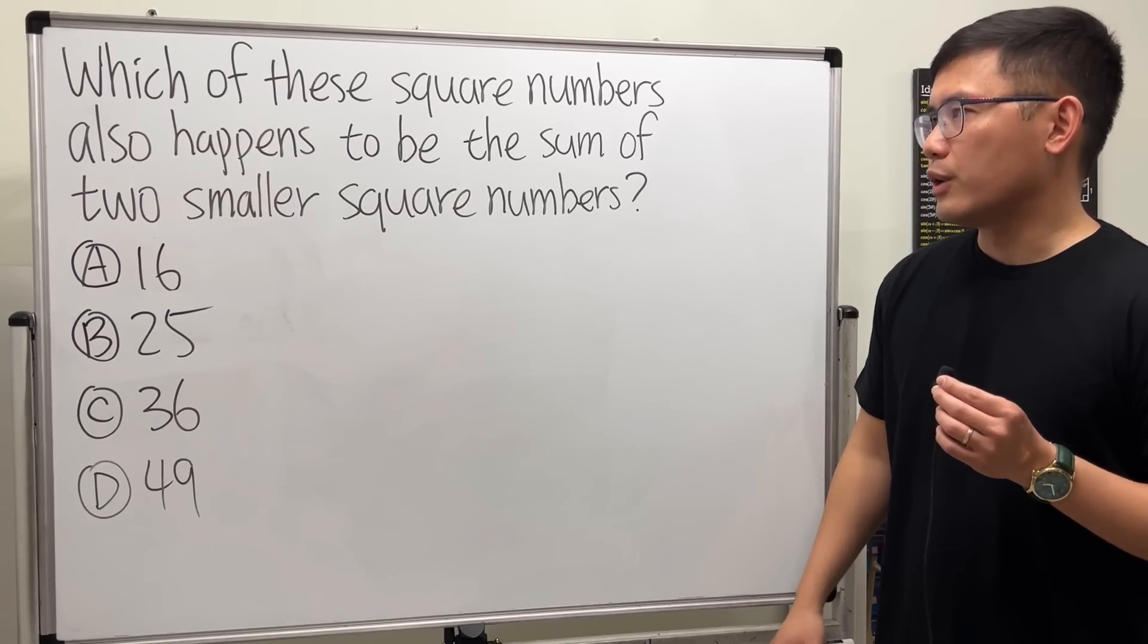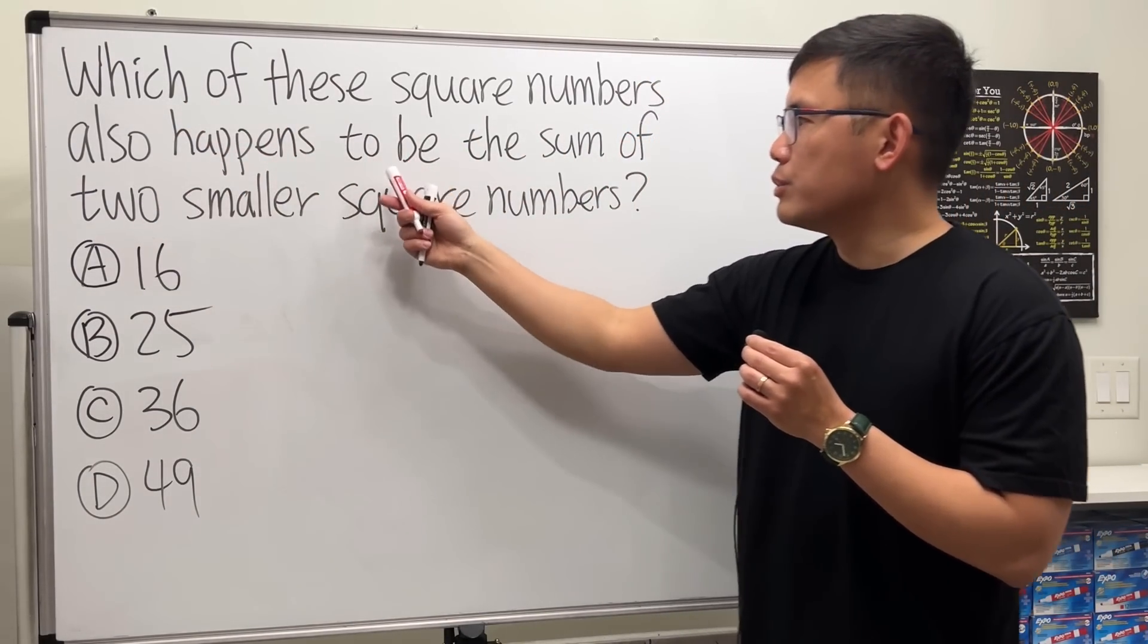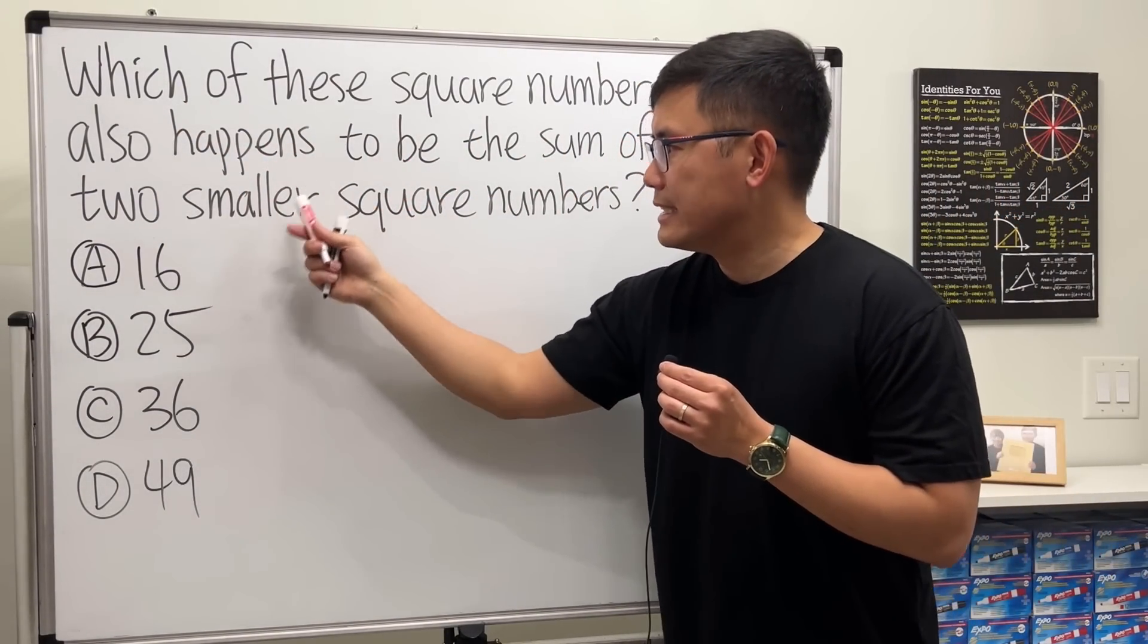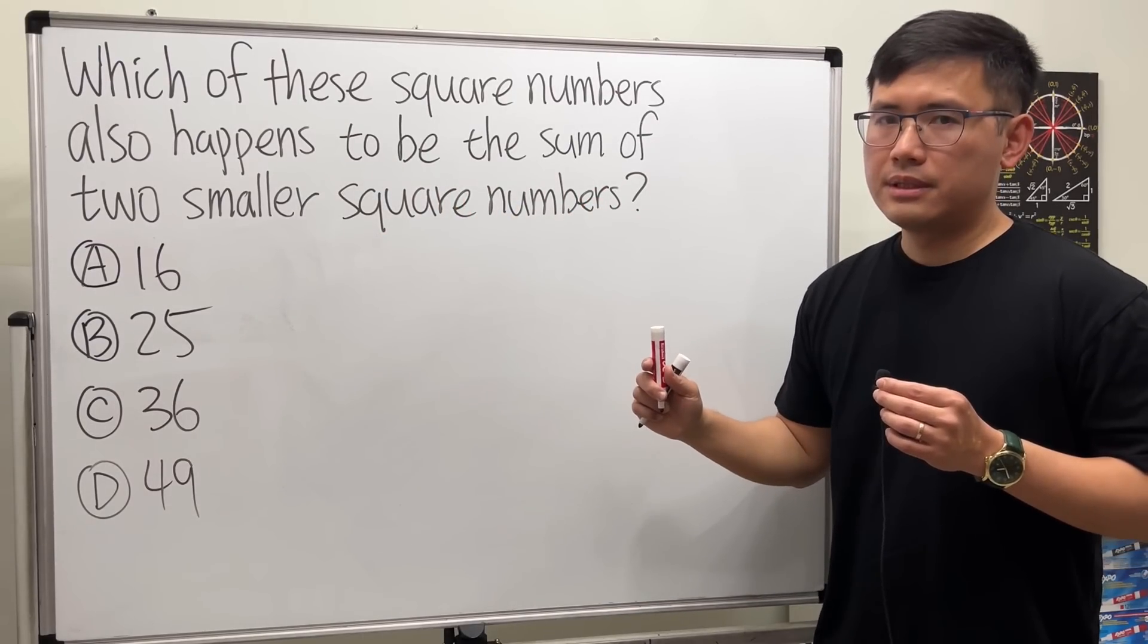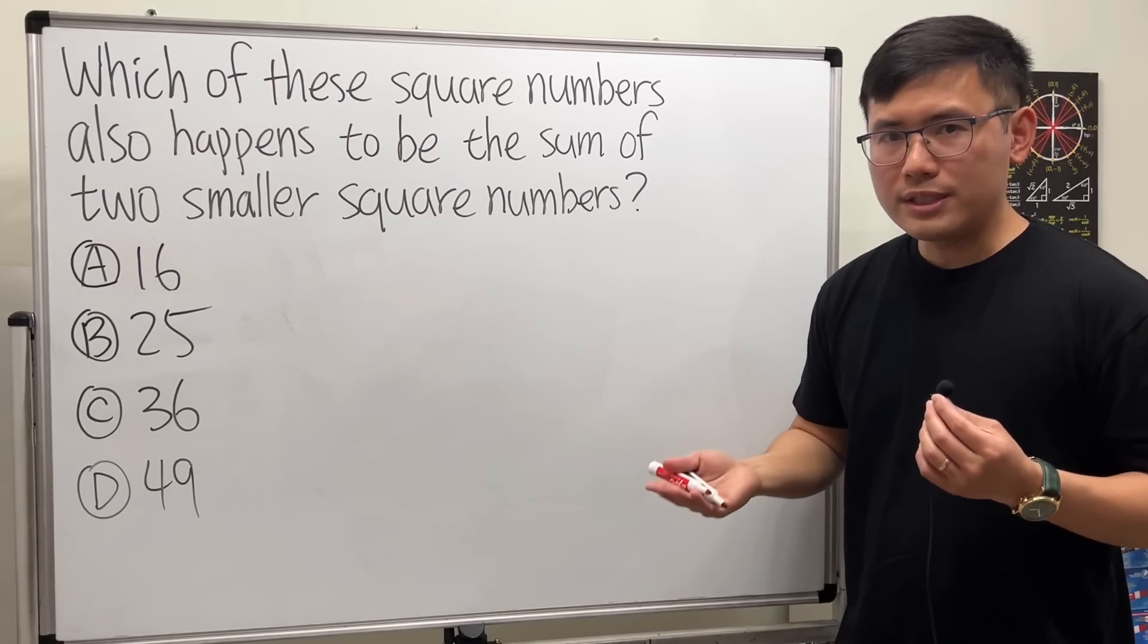Let's have a look at the question: which of the following square numbers also happens to be the sum of two smaller square numbers? Since he couldn't solve the question, it was on the show, so...